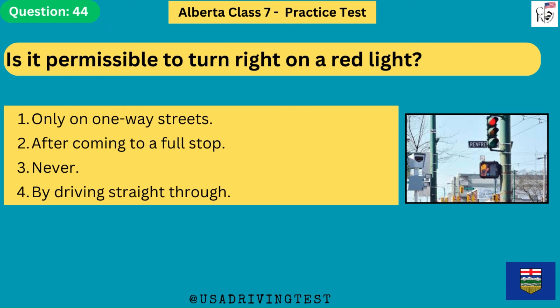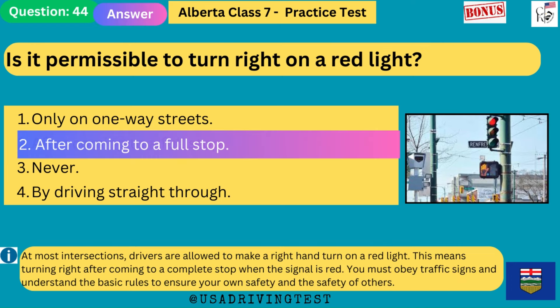Is it permissible to turn right on a red light? 1. Only on one-way streets. 2. After coming to a full stop. 3. Never. 4. By driving straight through. The answer is 2: after coming to a full stop. At most intersections, drivers are allowed to make a right-hand turn on a red light after coming to a complete stop when the signal is red. You must obey traffic signs and understand the basic rules to ensure your own safety and the safety of others.